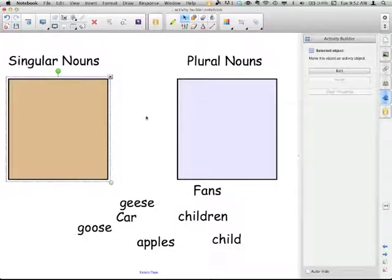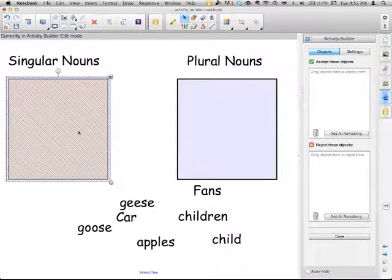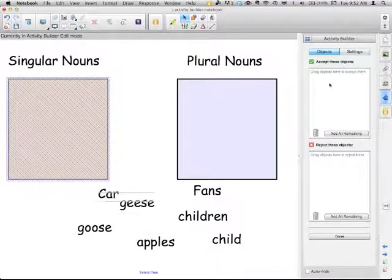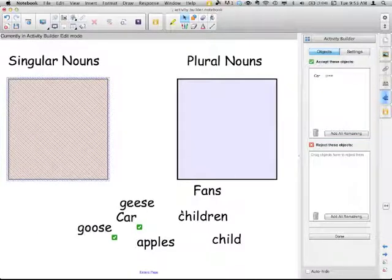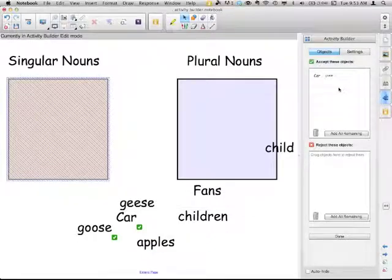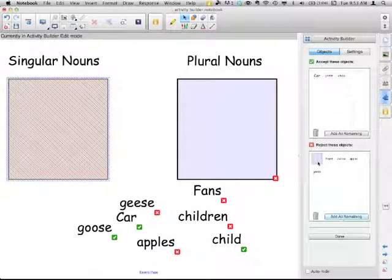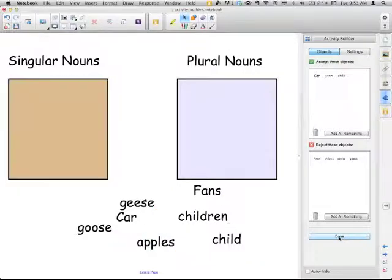So now I can select a different object. Click edit. So this will be the singular noun box. So what do I have? I'll have car will be accepted. Goose will be accepted. And child will be accepted. And then I'm going to reject everything else. And again, now this plural noun box is in there. So I'm just going to drag that to take that out of there. I'm finished editing this object. So now I can click done.